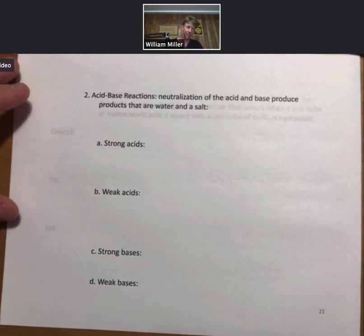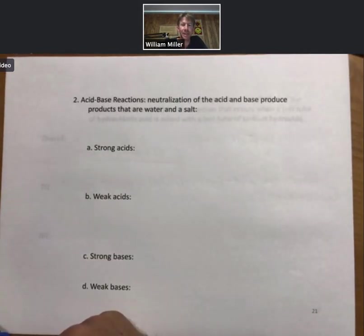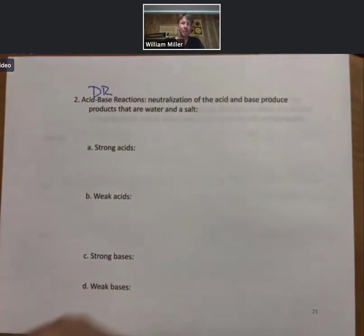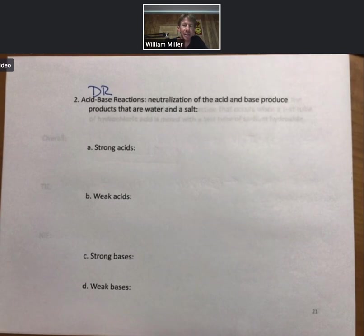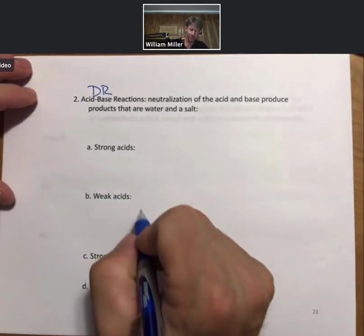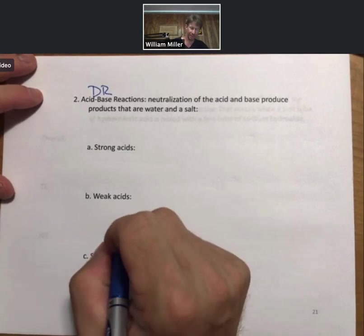Now let's pick up with our second subtype of reaction. Those are going to be double replacement acid-base reactions. This is still under DR for double replacement. Neutralization of the acid and base produce products that are water and a salt. And so before we do this, let's take a brief minute to go over strong acids.